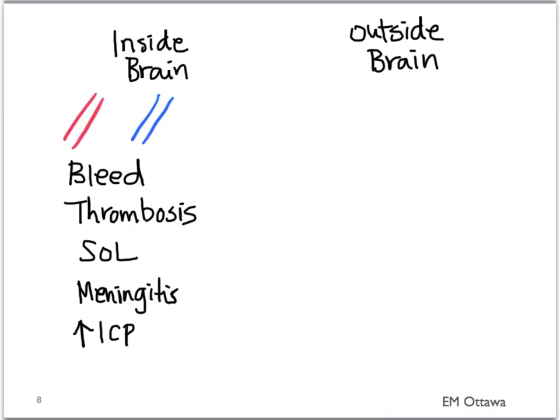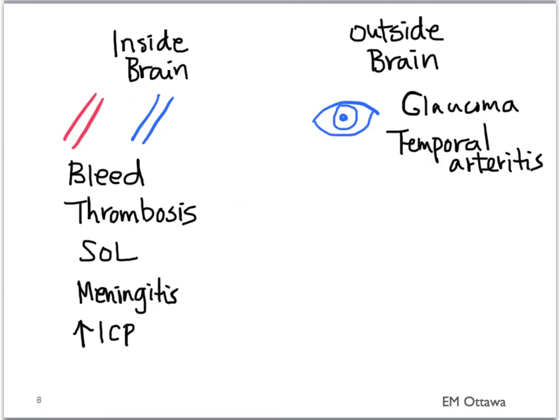Outside the brain, we must not miss acute angle closure glaucoma and temporal arteritis because they can affect vision. The last must-not-miss is carbon monoxide poisoning.